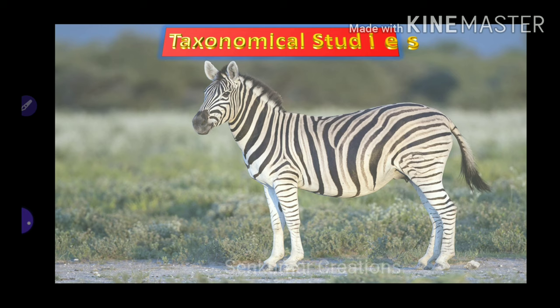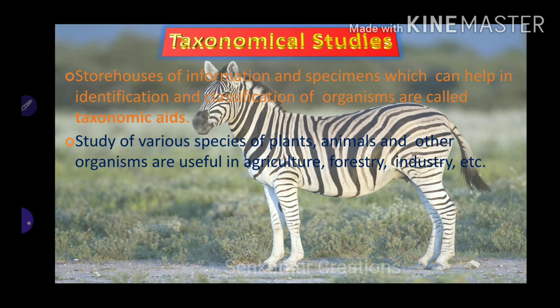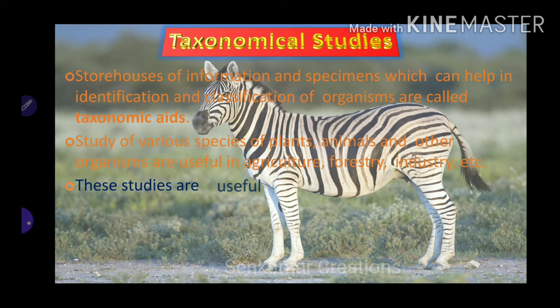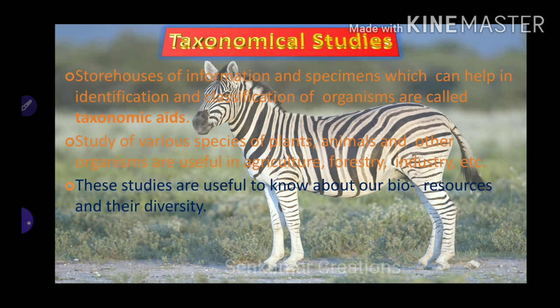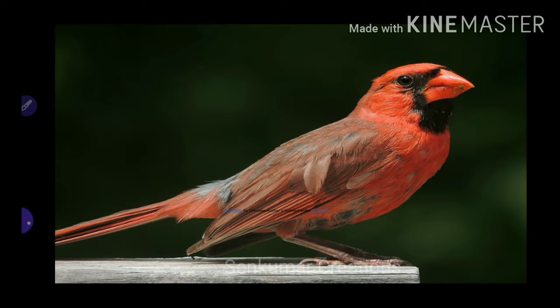Taxonomical studies: stored houses of information and specimens which can help with identification and classification of organisms are called taxonomical aids. Study of various species of plants, animals, and other organisms is useful in agriculture, forestry, and industry. These studies help to know about our bioresources and their diversity, and help in identification, naming, and classification of organisms.